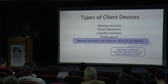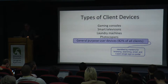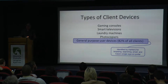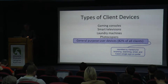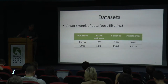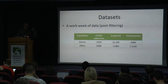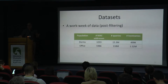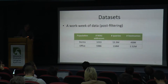Devices that didn't exhibit any of these markers turned out to be interesting cases. Our dorms are equipped with laundry machines that have internet connections, and people used gaming consoles and photocopiers capable of emailing scanned images. We focused only on user-facing devices. After filtering, we split the dataset into two parts — from the dorms, which is more typical of residential behavior, and from offices. In this talk and in the paper, we focus on dorm behavior.